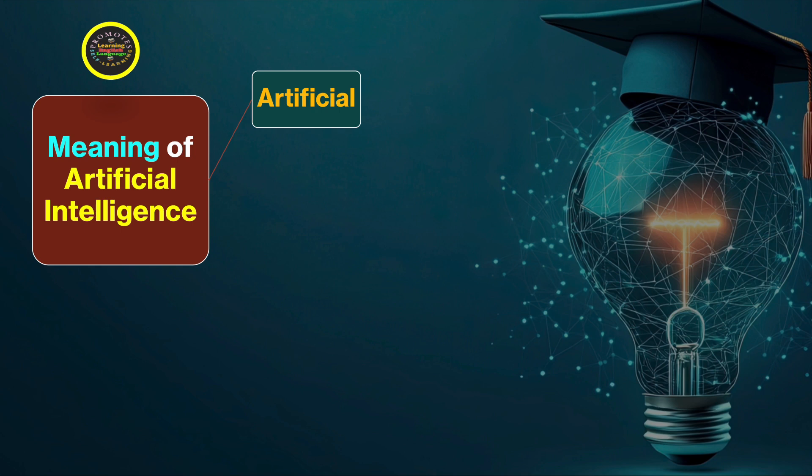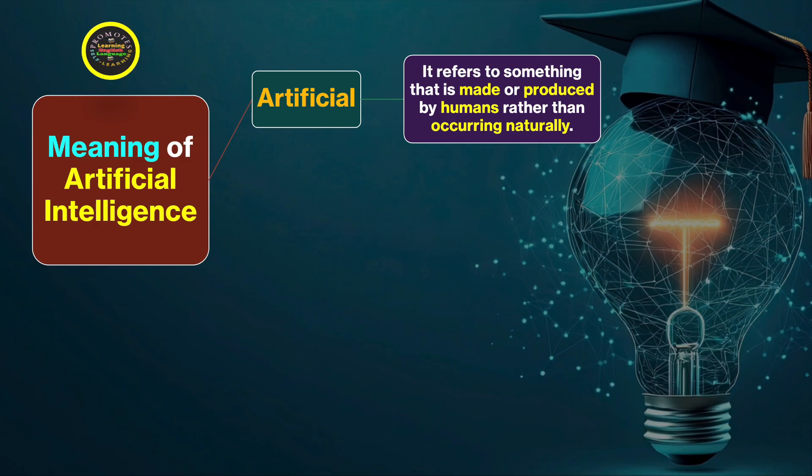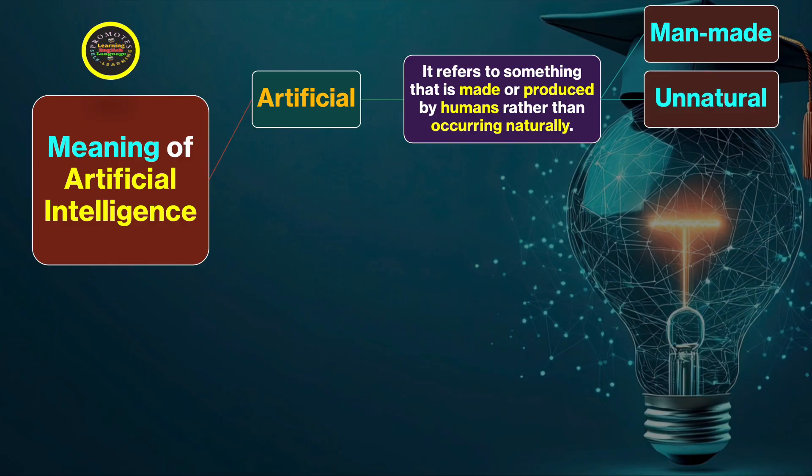Let's first talk about artificial. It refers to something that is made or produced by humans rather than occurring naturally. In other words, what is man-made is artificial, what is not natural or unnatural is artificial, or what is imitative - what humans imitate of what is reflected in nature - is artificial.